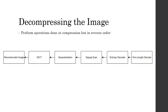Now we are to decompress the image. We will perform the operations done at compression, but in reverse order. So we will first run length decode, entropy decode, zigzag scan once more to put back into 8x8 blocks, dequantize, then take the inverse discrete cosine transform, and finally reconstruct the image by converting back to RGB.